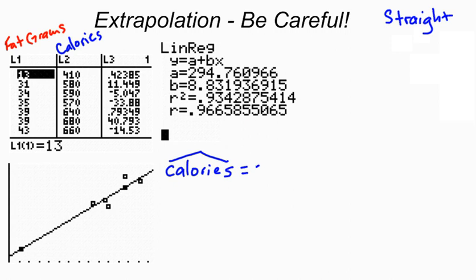My intercept is 294.76, plus my slope, which is 8.83, I'll go to two decimal places there, times my response variable, I'm sorry, my explanatory variable, which is fat grams.